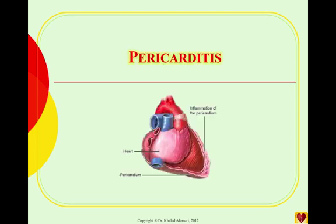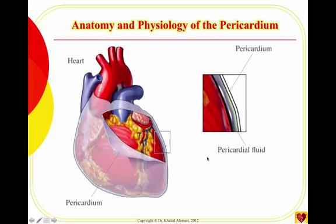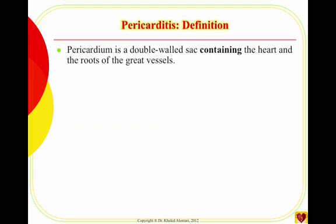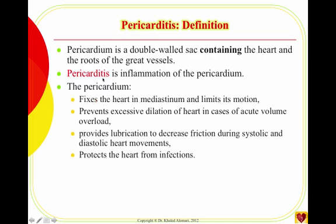The other layer of the heart that can become inflamed and affect the functions of the heart is pericarditis. To understand pericarditis, it's important to remember that the pericardium is basically that double-layer sac that surrounds the heart. The inflammation of it — when they add '-itis' — that's an inflammation of the pericardium.